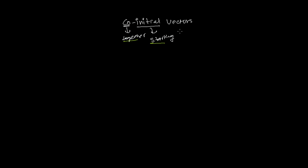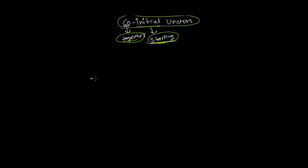As many vectors as we have, it doesn't matter — if all those vectors are starting together from a point, then those are called co-initial vectors. For example, let's say I have a point O, and from that point a vector OA is starting — this is vector OA, where this endpoint is point A.